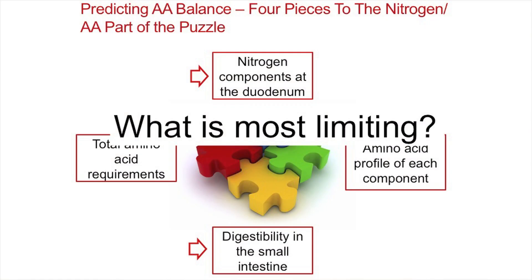So: intestinal digestibility, rumen requirements versus cow amino acid requirements, a little bit about missing information in feed chemistry, and then integrating ME and MP when it comes to amino acids. In this slide — we've used this a lot — this is part of what we're trying to get at.